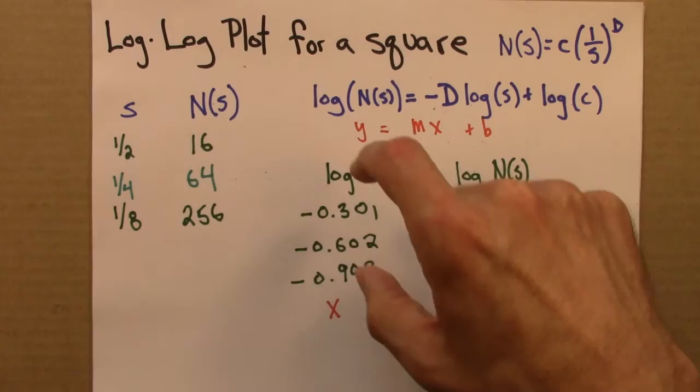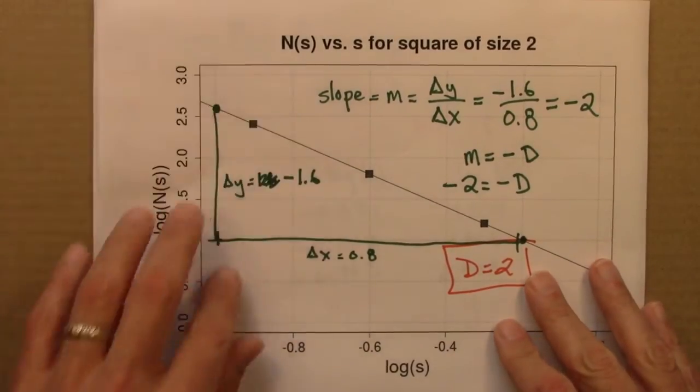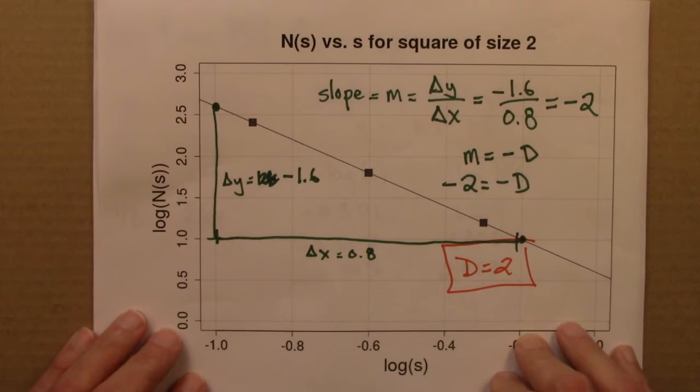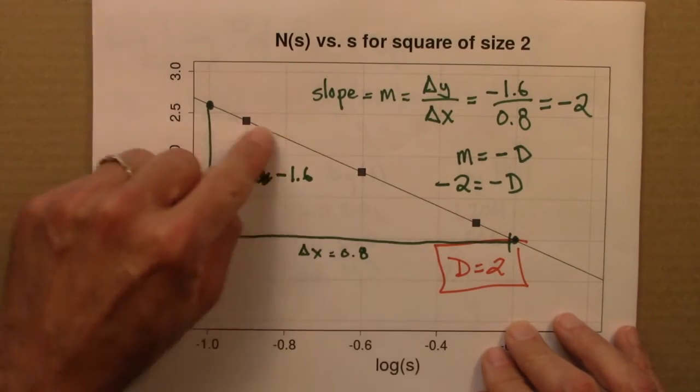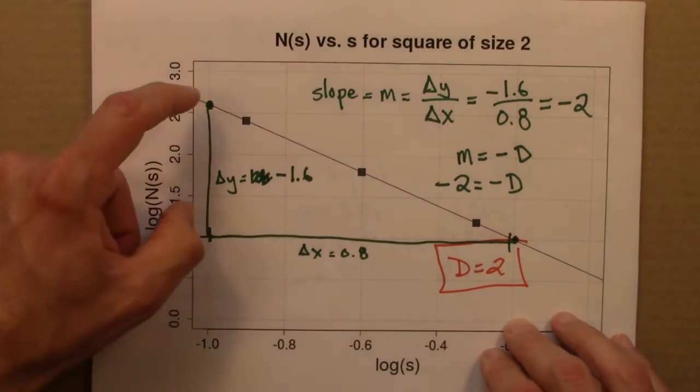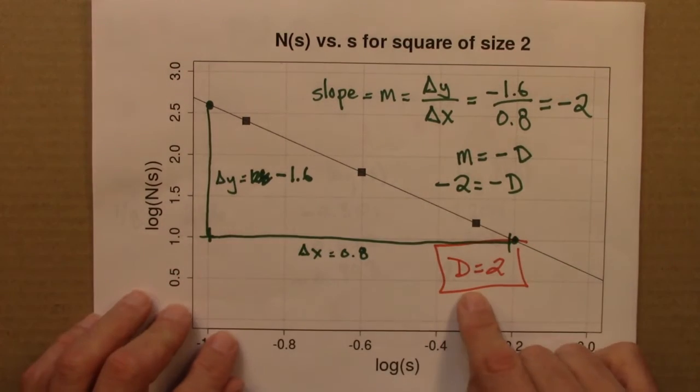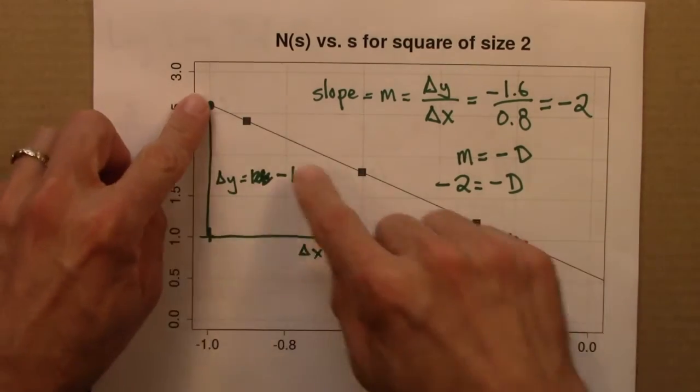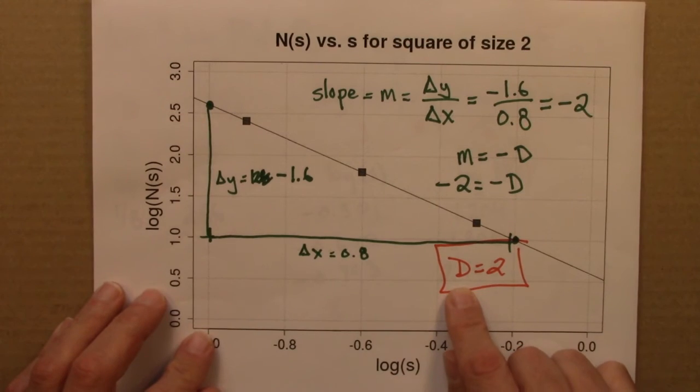So, I did that here. We did box counting. Then I took logs on a calculator. Then I plotted it with a statistics program. You could plot it by hand or using any spreadsheet. And in this case, we see that there's a line. And we can calculate the slope. And the slope up to a minus sign is the box counting dimension. And of course, you can have your spreadsheet or stats program calculate this slope as well.